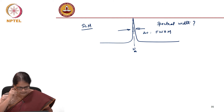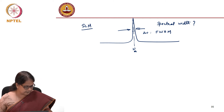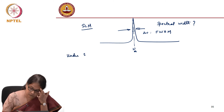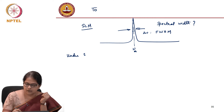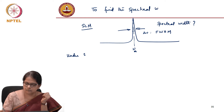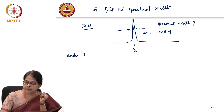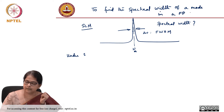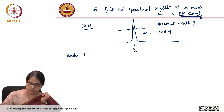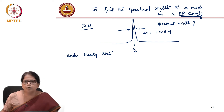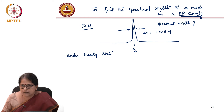To find this, let us get back to electromagnetics and consider the system under stable, steady-state conditions. The motivation is to find the spectral width — essentially the spectral width of the output of a laser, specifically the spectral width of a mode in a Fabry-Perot cavity. Under steady state, we are going to calculate what is the total intensity at the output of the laser.